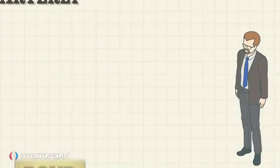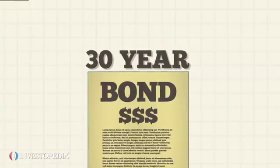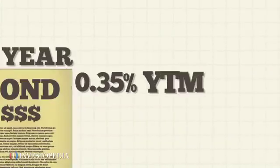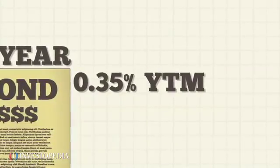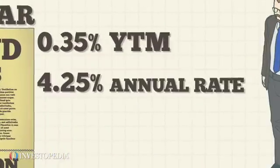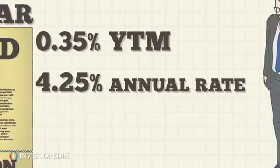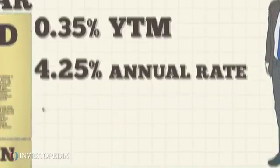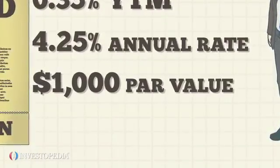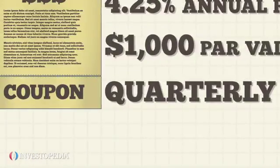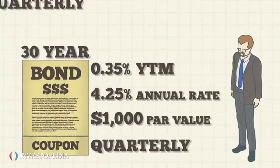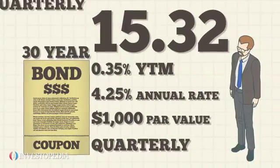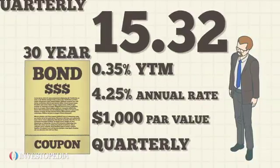Michael has a similar bond with a thirty-year maturity, a zero point three five percent yield to maturity, a four point two five percent annual rate, a one thousand dollar par value, and quarterly coupon payments. Its duration is fifteen point three two.